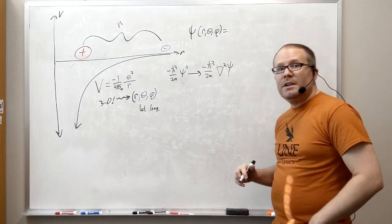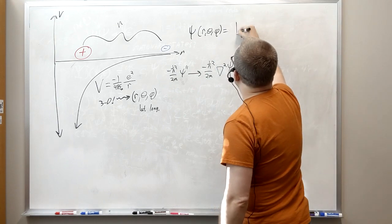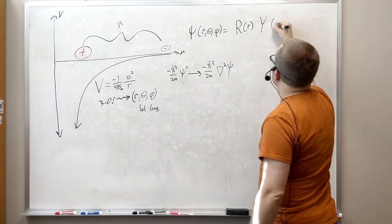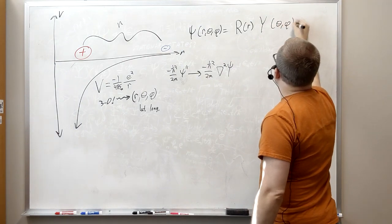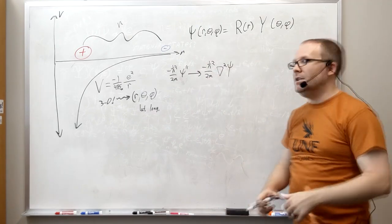The trick we're going to use here is something called separation of variables, where we're going to take this thing and separate it into a function of r and a function of theta and phi. We're taking the distance dependence and separating it from the angular dependence.